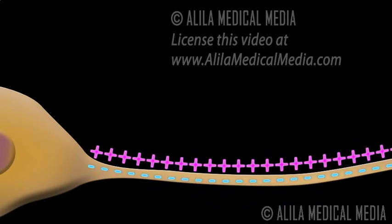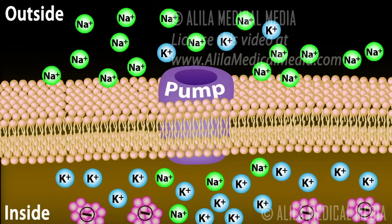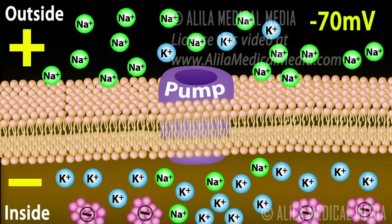An action potential is essentially a brief reversal of electric polarity across the cell membrane. Cells are polarized, meaning there is an electrical voltage across the cell membrane. In a resting neuron, the typical voltage, known as the resting membrane potential, is about negative 70 millivolts. The negative value means the cell is more negative on the inside.